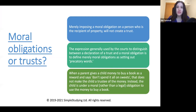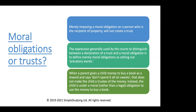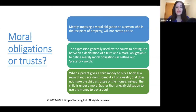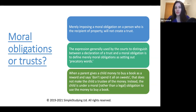It is important that you know relevant cases to distinguish moral obligations from trusts. Merely imposing a moral obligation on a person who is the recipient of property will not create a trust. Courts refer to such obligations as 'precatory words.' For example, when a parent gives a child money to buy a book and says 'don't spend it all on sweets,' that does not make the child a trustee — the parent is simply imposing a moral obligation, and there is no trust.